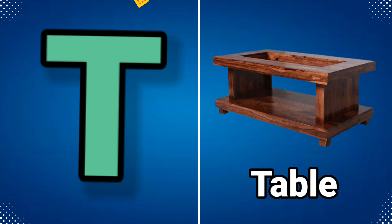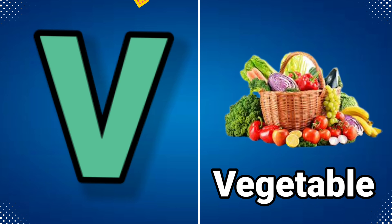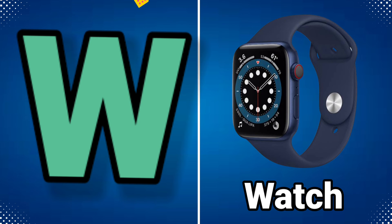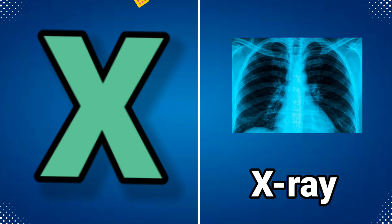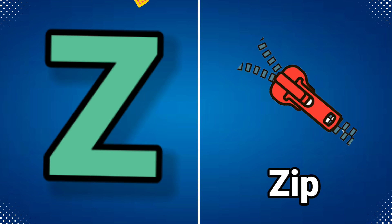T for table, U for umbrella, V for vegetable, W for watch, X for x-ray, Y for yarn, Z for jeep.